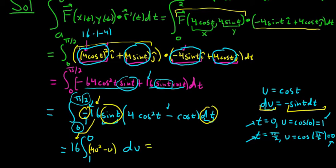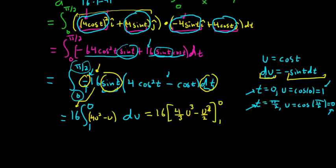What's left is the cosine stuff. So it's parentheses 4u squared minus u. So now we can integrate this. This is 16. When you integrate u here, use the power rule. So you get 4 thirds u cubed minus u squared over 2. And we're going from 1 to 0.